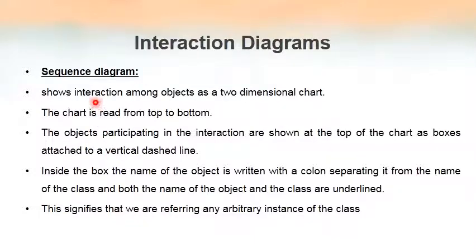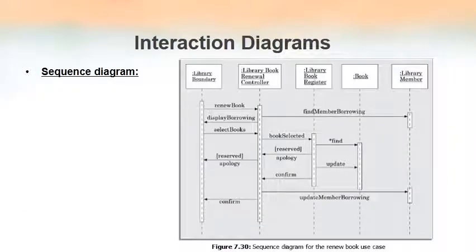A sequence diagram shows the interaction among objects and represents the interaction in terms of a two-dimensional chart. When we draw this sequence diagram, we have to read it from top to bottom — that is very important. We represent the objects participating in the interaction at the top of the chart in boxes. Inside each box, we write the class name as well as the object name, separated by a colon operator.